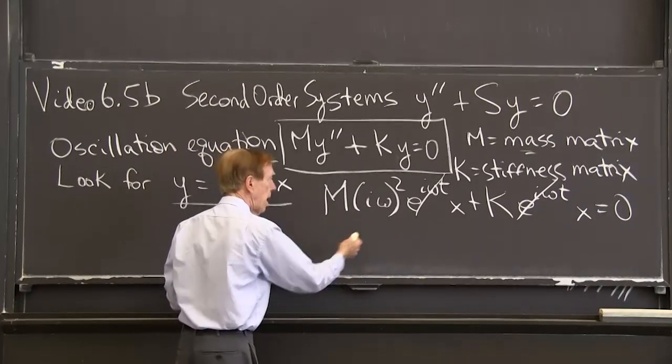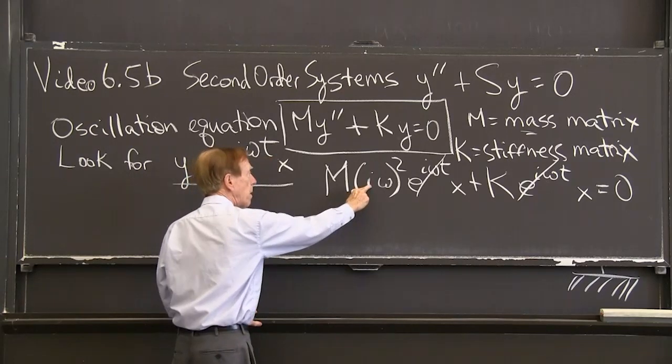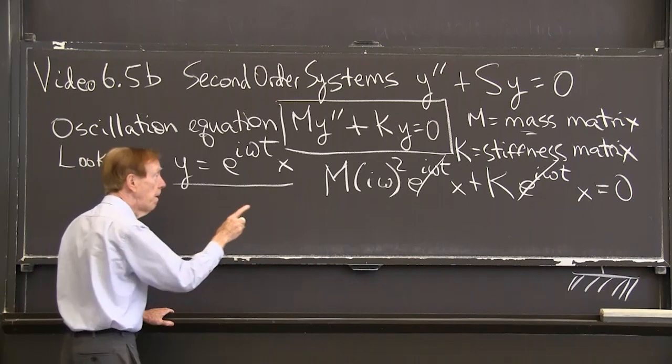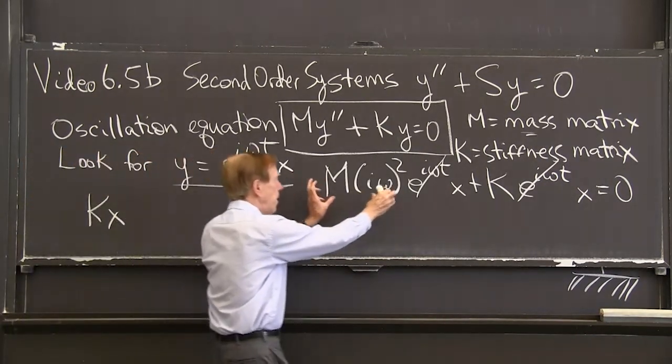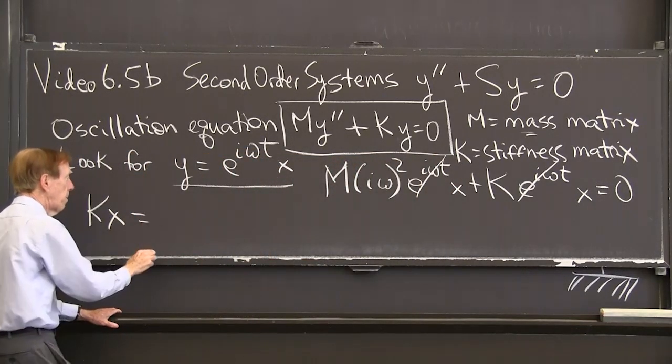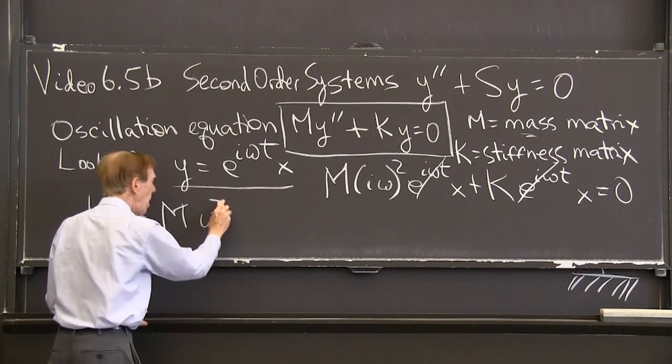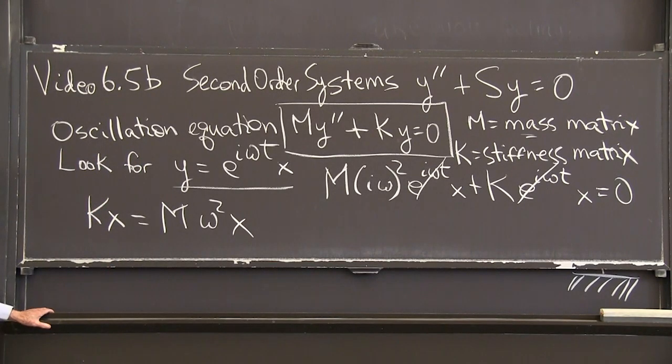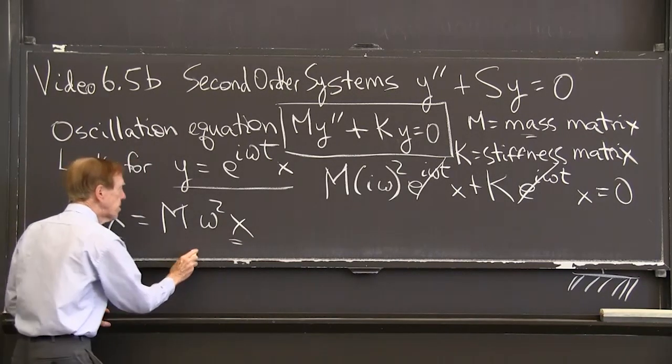And I see I have an eigenvalue problem. I'm going to put that on the opposite side. But i squared is giving me minus 1. I'm just going to be left with kx equals m omega squared x. That's an eigenvalue problem. Here is the eigenvector, there is the eigenvalue.